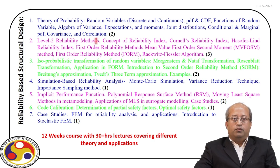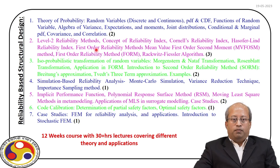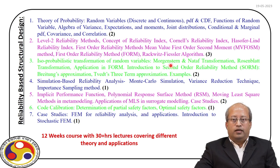Then we will move to level 2 reliability analysis, where we will first define the reliability index as proposed by Cornell and also Hasofer-Lind, and then we will study the mean value first order second moment method and first order reliability methods. Once we complete level 2 reliability analysis, we will discuss isoprobabilistic transformation, covering the Morgenstern and Nataf model and also the Rosenblatt transformation.